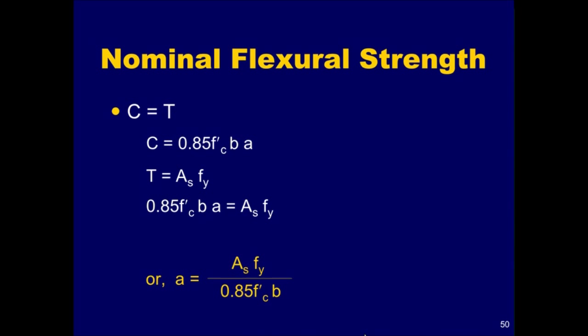The compressive force C is equal to the area of the equivalent compression zone, which is 0.85 f'c times the area B times a. The tensile force in the reinforcing steel is equal to the total area of the steel, A sub s, times the yield stress of the reinforcement. Setting C equal to T results in a solution for the depth of the equivalent stress block, a.